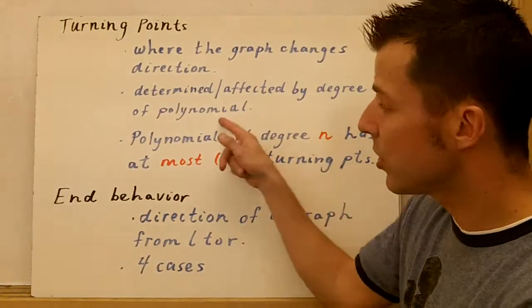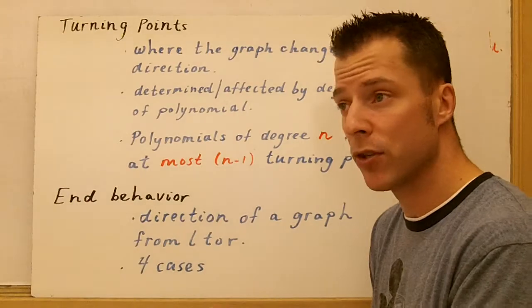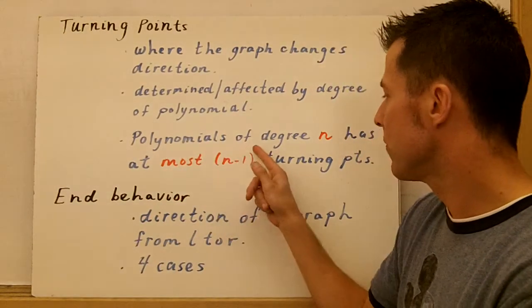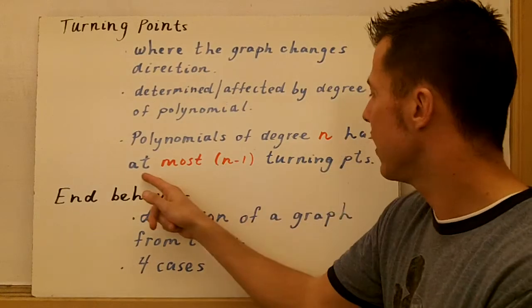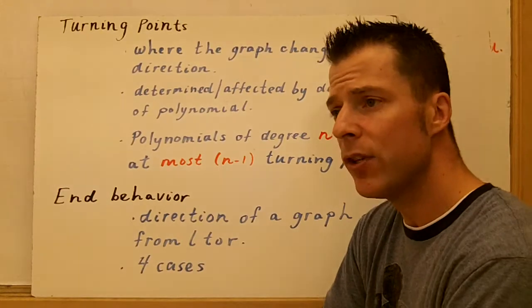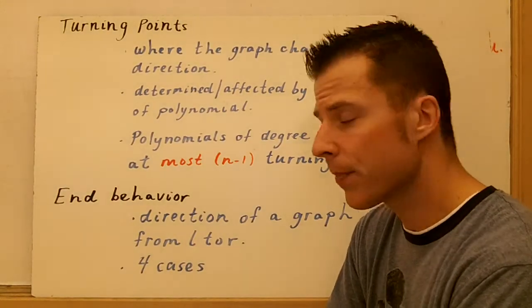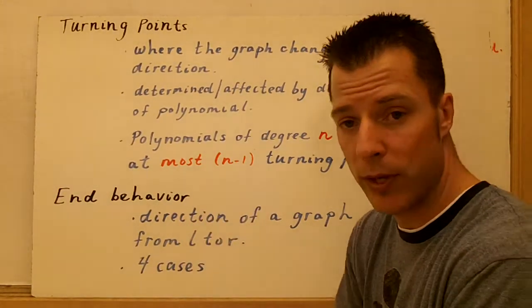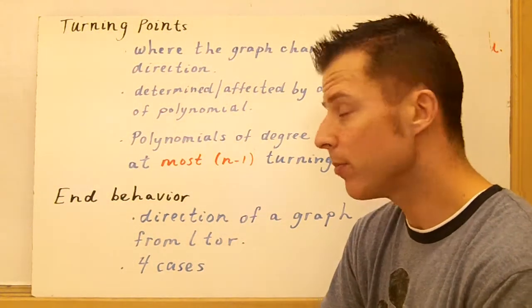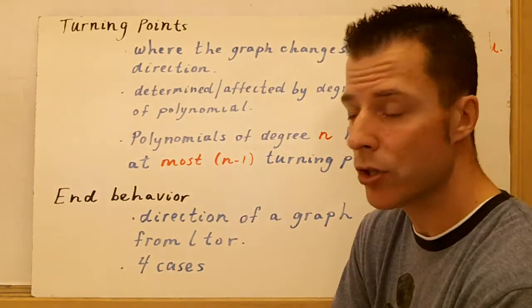It's determined or affected by the degree of the polynomial. So the number of turning points is affected by the degree of the polynomial. Polynomials of degree n has at most n minus 1 turning points. So, for example, if you have a cubic function, the most turning points it can have is two. It could have one turning point, but at most it's going to have two turning points.